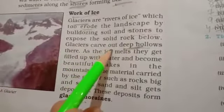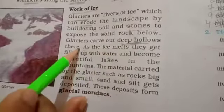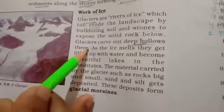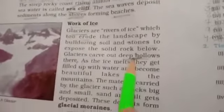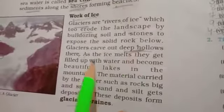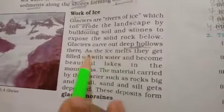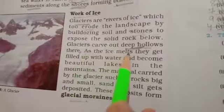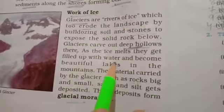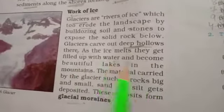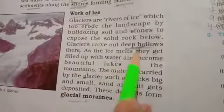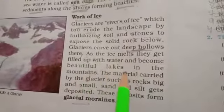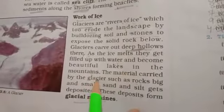Glaciers form deep hollows where a big piece of ice falls down. Where these deep hollows form, the ice melts and they get filled up with water, forming beautiful lakes in the mountains.